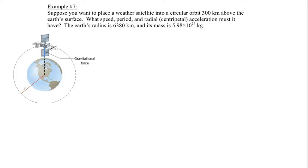Suppose you want to place a weather satellite into a circular orbit 300 kilometers above the Earth's surface. What speed, period, and centripetal acceleration must it have? We're given the Earth's radius is 6,380 kilometers and the mass of the Earth is 5.98 times 10 to the power 24 kilograms.